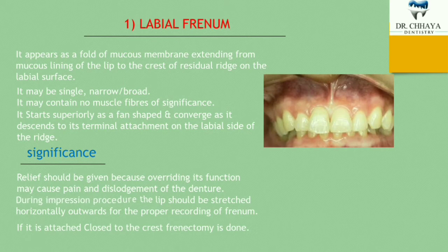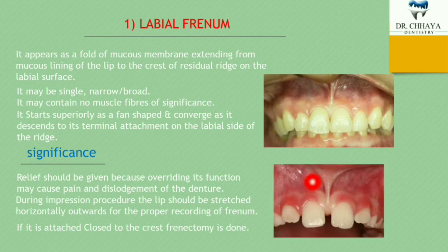During the impression procedure, the lip should be stretched horizontally outward for the proper recording of the phrenum. We pull the upper lip of the patient outward and manipulate it so that the labial phrenum is recorded in the impression. If the phrenum is attached close to the crest, a phrenectomy is done. Many patients have the labial phrenum attached too close to the crest of the alveolar ridge, causing displacement of the denture, so surgical removal (phrenectomy) is required before recording.